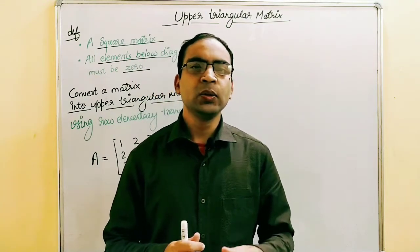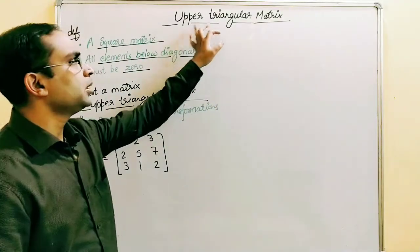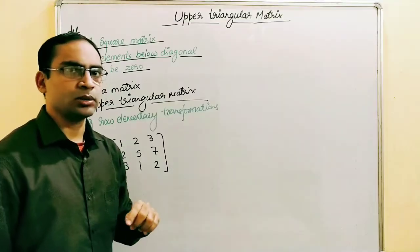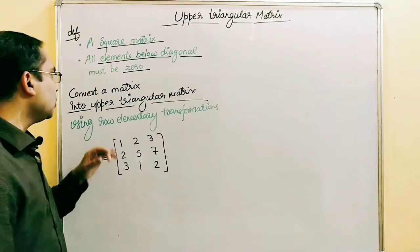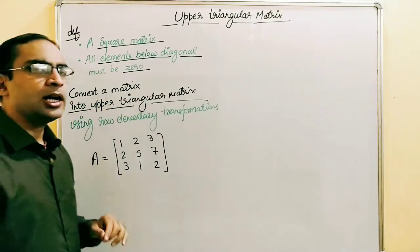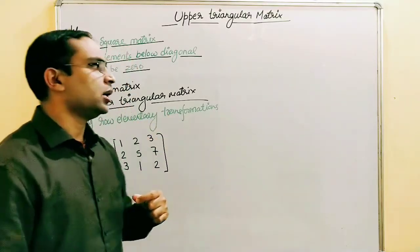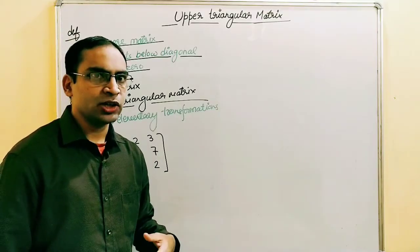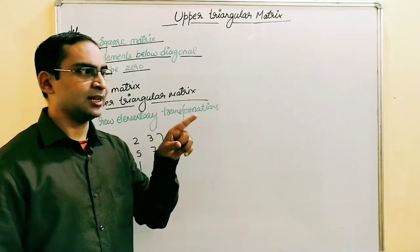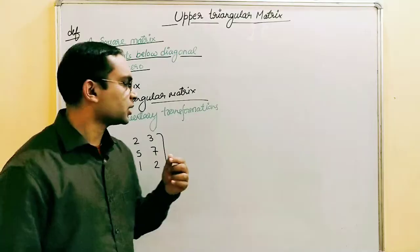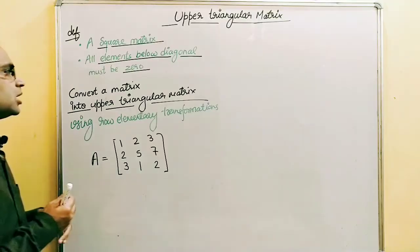Hello all, today we will learn a new lesson in the matrix. We will learn about upper triangular matrix — two things: what is an upper triangular matrix, and how we can convert a matrix into an upper triangular matrix using row elementary transformations. If you have not seen row elementary transformations, I have made a video on it and will give the link at the end of the screen.